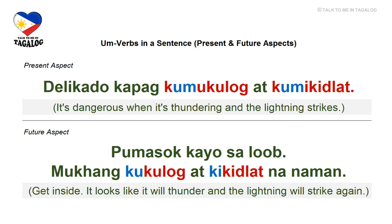Present aspect: Delikado kapag kumukulog at kumikidlat — 'It's dangerous when it's thundering and the lightning strikes.' Delikado means dangerous, kapag means when or if, kumukulog is thundering, and kumikidlat is when the lightning strikes. Future aspect: Pumasok kayo sa loob, mukhang kukulog at kikidlat na naman — 'Get inside; it looks like it will thunder and the lightning will strike again.'